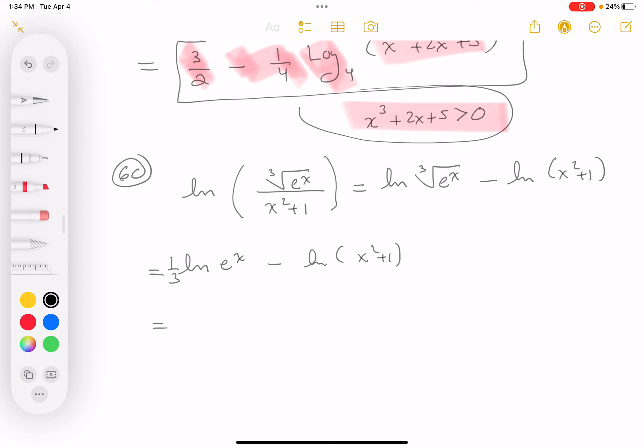But I can take the natural log of e to the x, just x. So you get x over 3 minus the natural log of x squared plus 1. No restrictions.